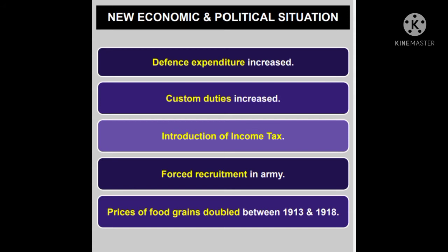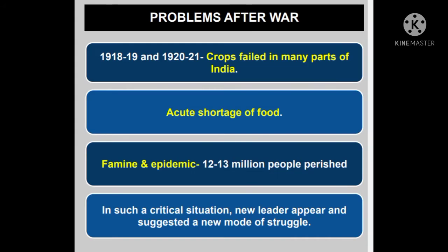Then in 1918 and 1920, Bharat mein crops fail ho gayi — in some parts of India the crop totally failed, resulting in acute shortage of food. This was accompanied by an influenza epidemic. According to the census of 1921, near about 12 to 13 million people perished as a result of famines and epidemic. Is mahamari ke karan, akal ke karan, lagbhag 12 se 13 million logon ki jaan gayi.